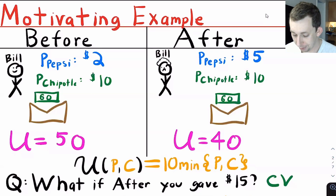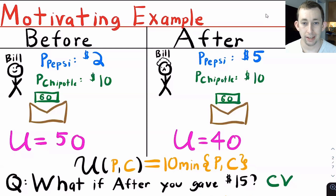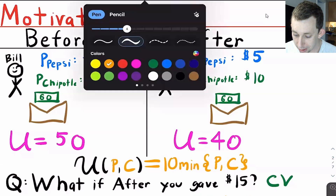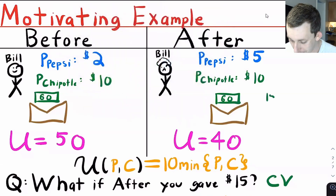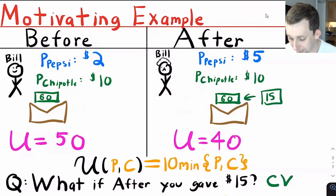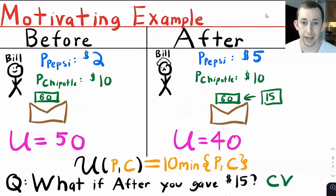For compensating variation, the idea is we're going to ask: what if you tried to get Bill back to his original utility of 50? What you could do is hand Bill a $15 bill. If you hand Bill $15, then he has $75, he can afford five bundles again. So his compensating variation is $15 — that's how much you'd need to pay him to get back to his original utility.